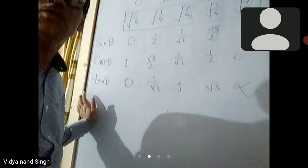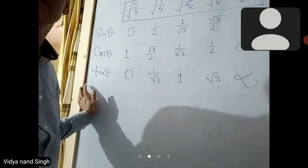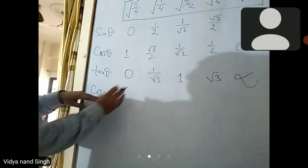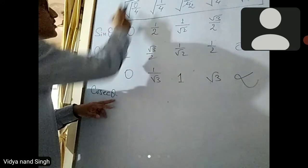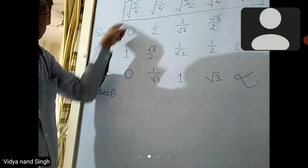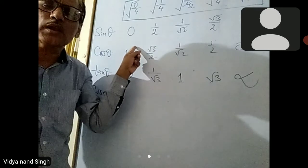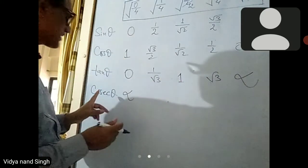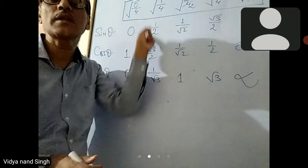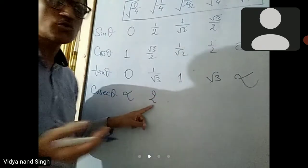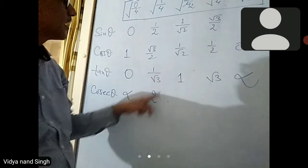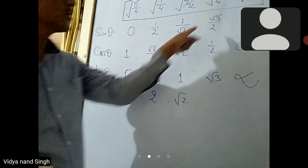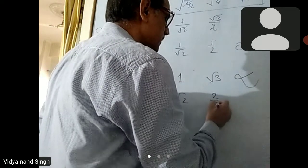अब साइन का reciprocal क्या होता है — cosec theta। तो उसका value लिखना है: 1 by 0 means infinity; 30° means 1 by 2 is reciprocal, so 2 by 1 equals 2; 1 is 1; 1 by root 2 is reciprocal, so root 2; root 3 by 2 is reciprocal, so 2 by root 3; and 1 by root 3 is reciprocal.